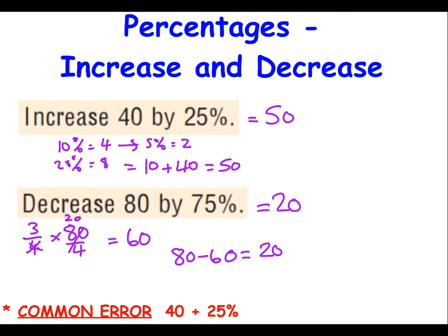A common misconception is where people increase the value by adding the percentage directly — doing 40 plus 25, which is 65 — and that doesn't work. You have to work out the percentage amount first and then either add it to increase or subtract it to decrease the original amount.